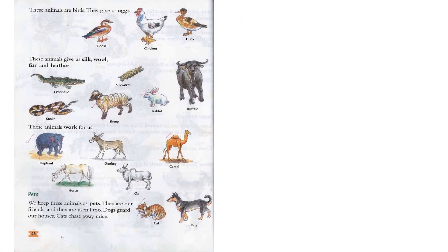On page 28, some animals are birds that give us eggs. In this picture you can see a goose, a chicken, and a duck — from the goose and chicken we get eggs. Some animals also give us silk, wool, fur, and leather. From this picture you can see a crocodile gives us leather, the silkworm gives us silk, the buffalo gives us leather, the rabbit gives us leather, and the sheep gives us fur or wool. The snake also gives us leather.